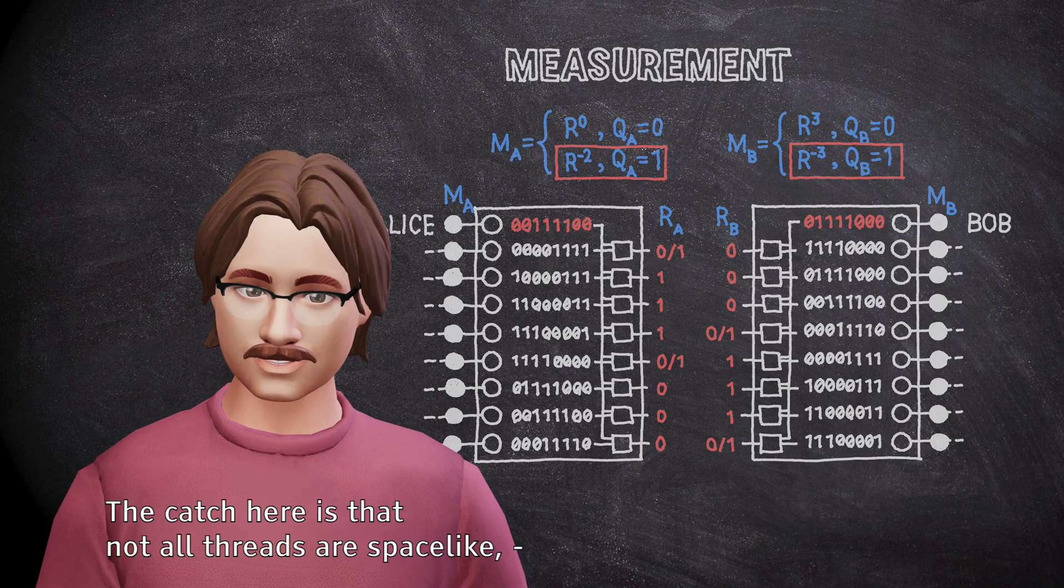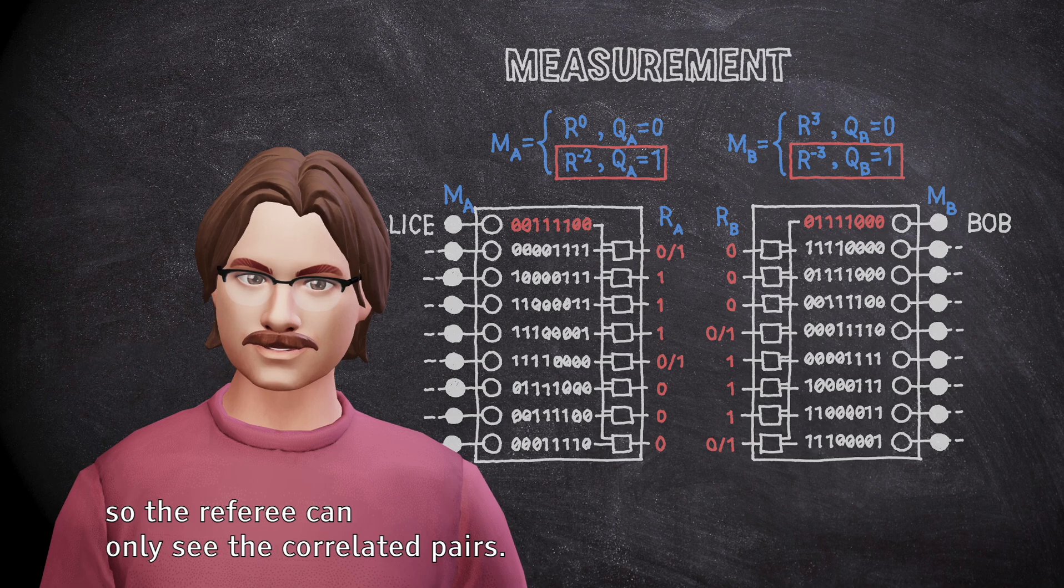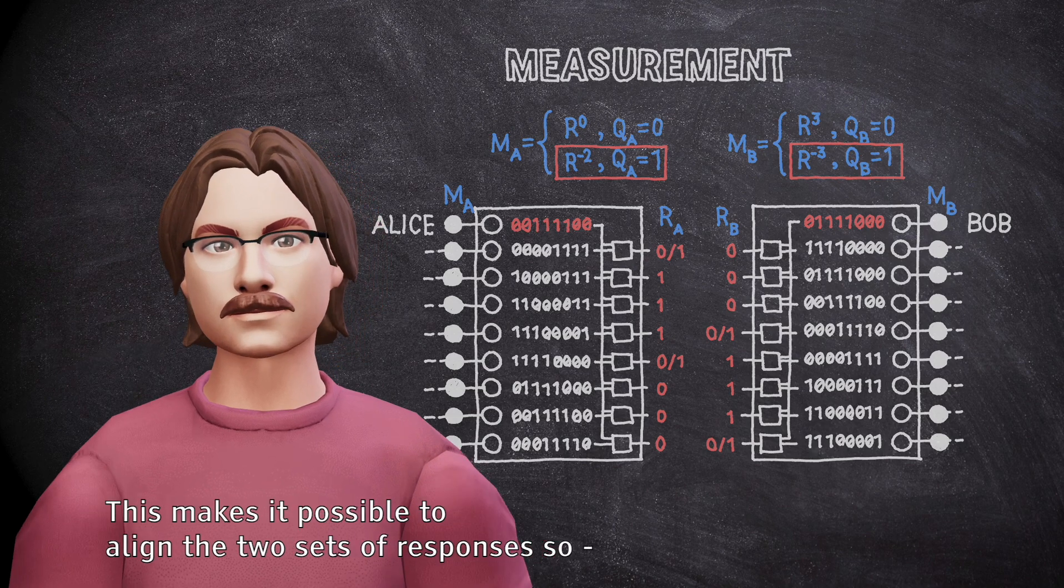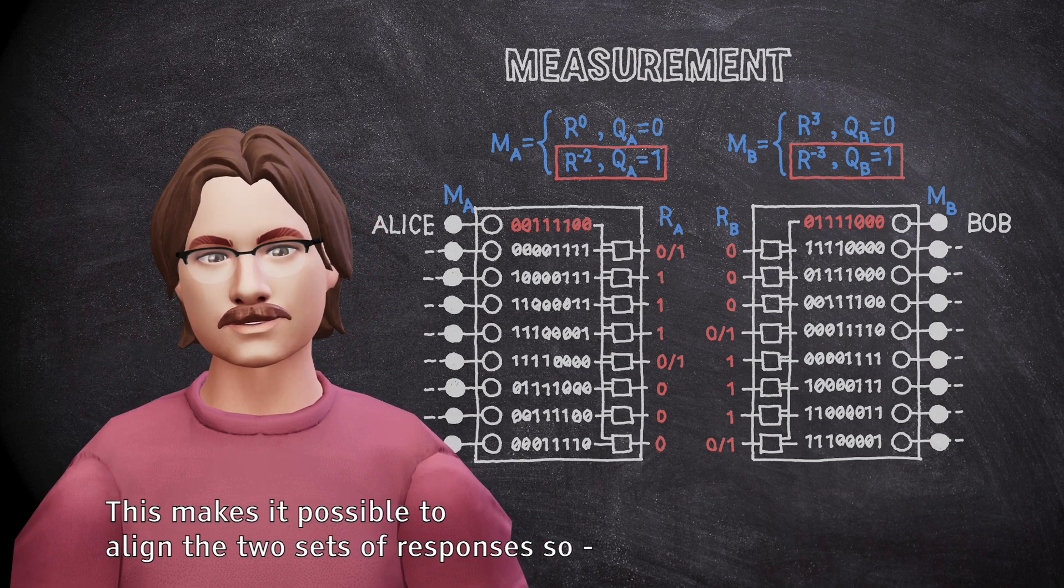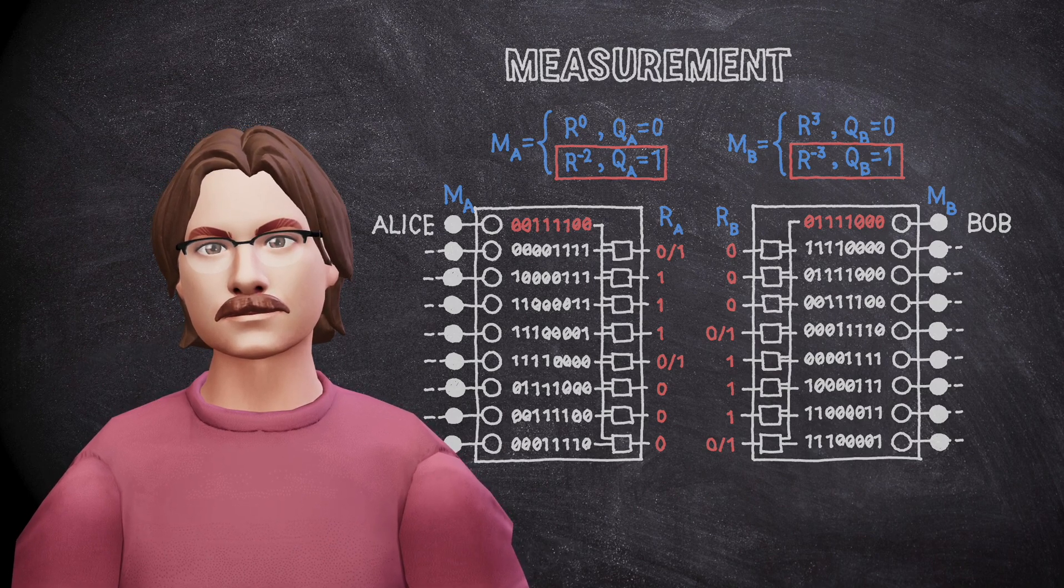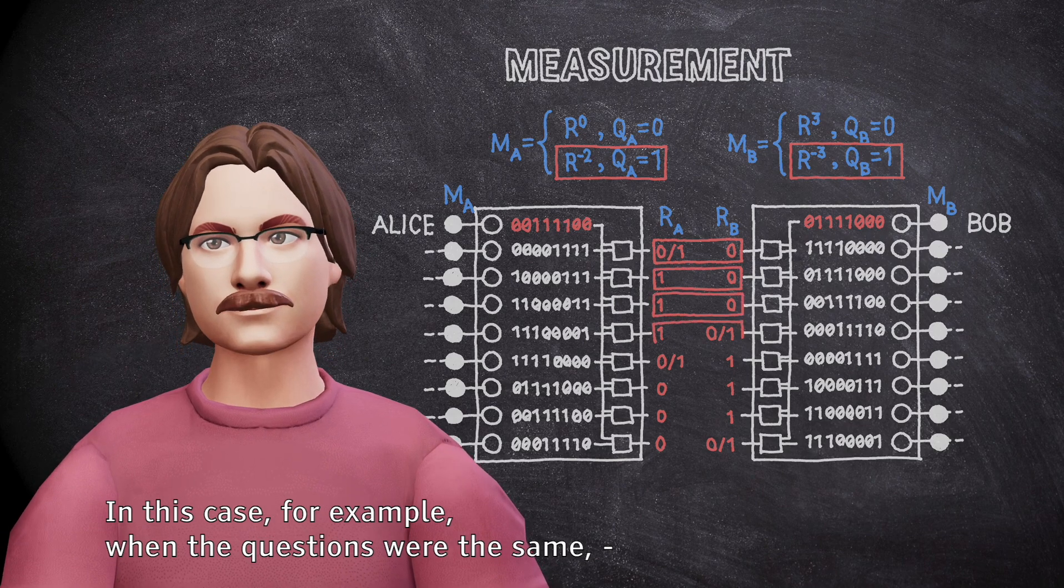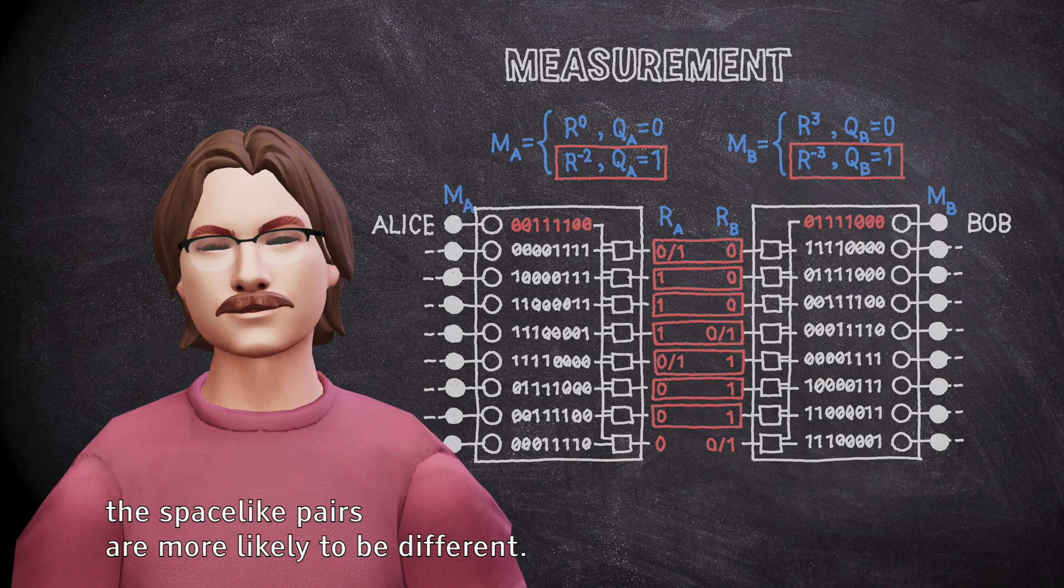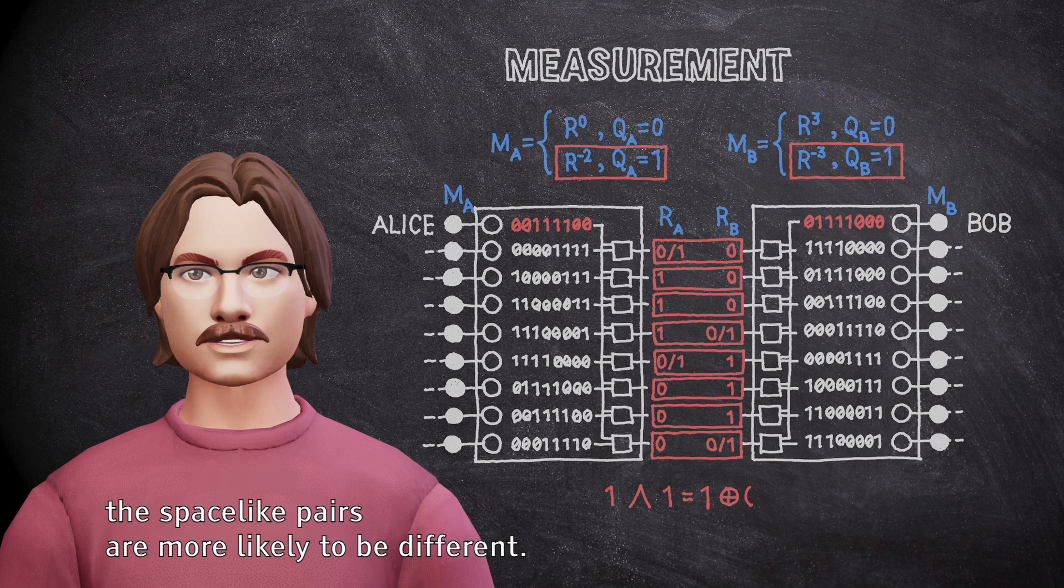The catch here is that not all threads are space-like, so the referee can only see the correlated pairs. This makes it possible to align the two sets of responses so that the pairs are more likely to win. In this case, for example, when the questions were the same, the space-like pairs are more likely to be different.